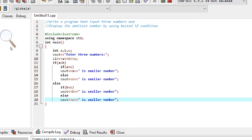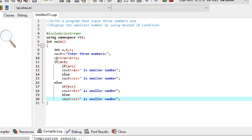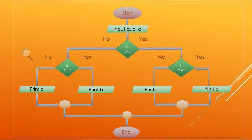Now let us move towards the flowchart of this program to understand which conditions the program enters. The program inputs three numbers a, b, and c. When the control enters the outer condition, the first if condition — a is less than b — is evaluated. If it is true, control enters the smaller nested if block where a is less than c is evaluated. If that is also true, the value a is displayed as the smallest.